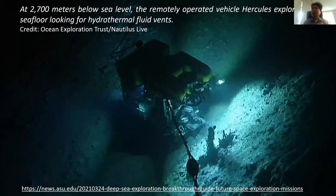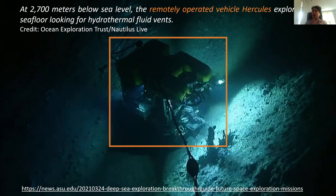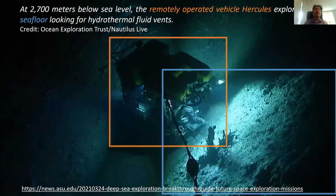Now let me show you the caption associated with this image. It reads: at 2,700 meters below sea level, the remotely operated vehicle Herclius explores the CBAP looking for hydrothermal vent bands. By reading this caption, a lot of things now make sense within this image. For example, if you look at the vehicle in the middle, you'll know this is a remotely operated vehicle called Herclius. This is a CBAP, and this weird-shaped object may be the hydrothermal vent bands — which is almost like an alien concept to me.